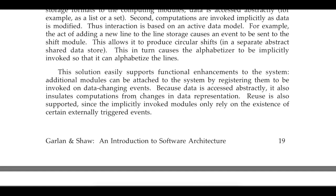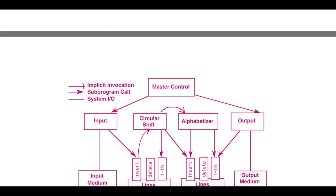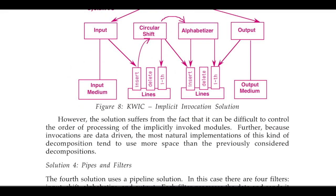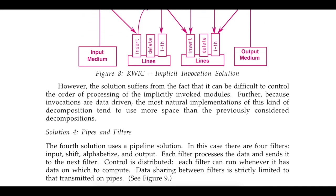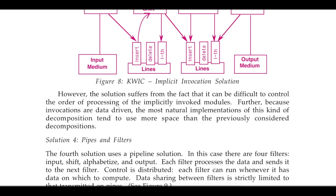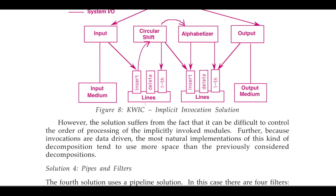Because data is accessed abstractly, it's also insulated from changes in data representation — if data changes, the program doesn't have to change since it's represented by interfaces. The problems are that invocations are data-driven, it tends to take more space than the previous decompositions, and since one event calls another, it's difficult to control the order of processing of the implicitly invoked modules.